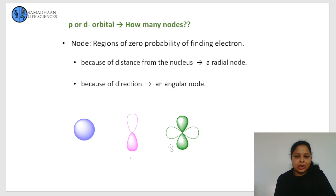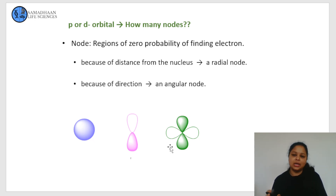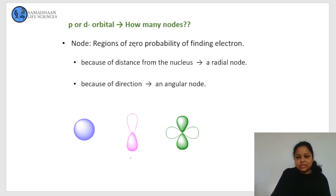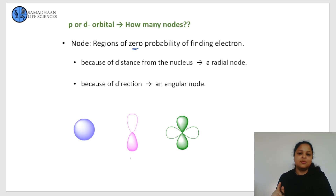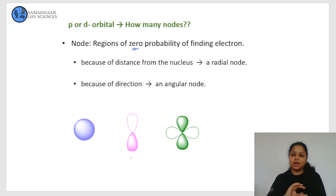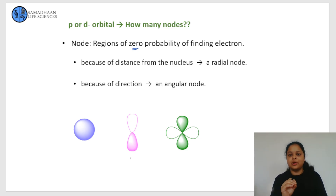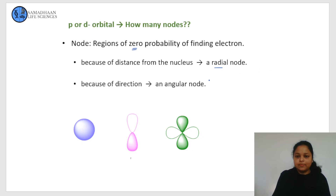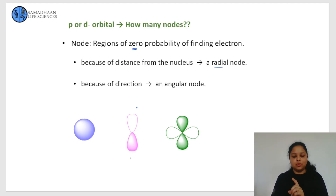Now let's move on to orbital nodes. Orbitals are the region where probability of finding an electron is maximum. We also have regions where the probability of finding an electron is exactly 0, and we call these regions nodes. We can reach this zero probability in two ways: first, by the distance from the nucleus — if the nucleus is at the center, there can be a hollow spherical region where probability is 0, called a radial node. The second way is due to direction, and we call that an angular node.